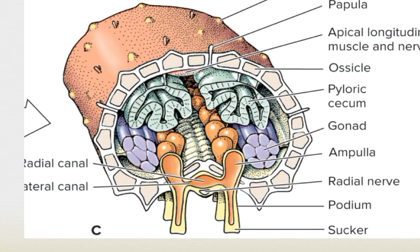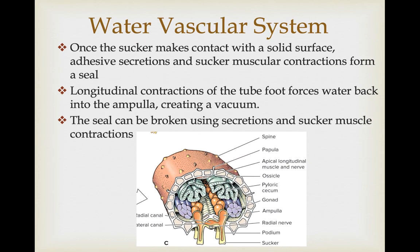This creates a vacuum. Once it wants to release, the seal can be broken using additional secretions and the sucker muscles can pull apart. An individual tube foot is not very strong, but collectively, many tube feet together provide very strong gripping power, allowing organisms to grasp solid surfaces. This is important for foraging but also in intertidal areas where they're trying to hold onto rocks and not be washed away. It's like a small piece of velcro individually easy to rip, but a big sheet of velcro is very hard to pull apart.